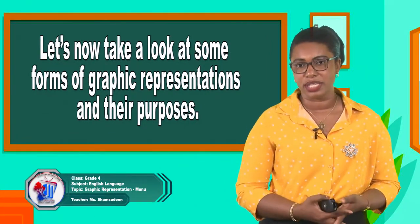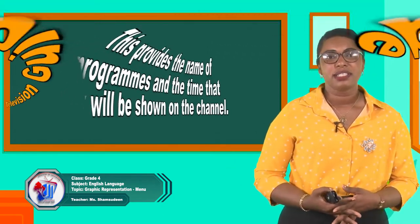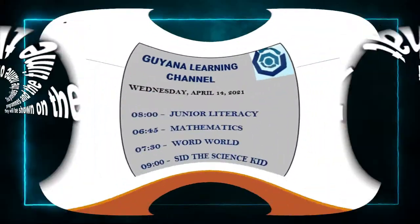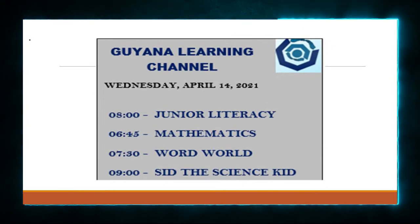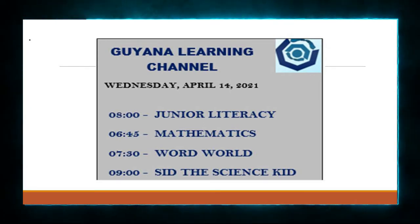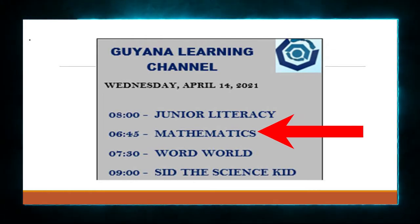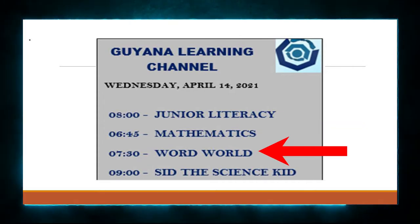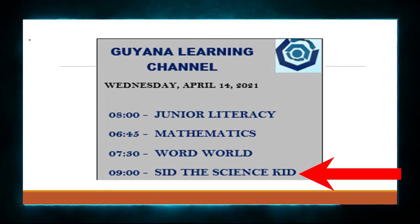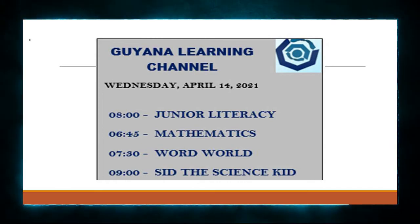Let's look at some of the forms of graphic representations and their purposes. The television guide, or TV guide, provides the name of programs and the time they will be shown on the channel. Here is an example from the Guyana Learning Channel for Wednesday, April 14, 2021. At 8 you have Junior Literacy, at 8:45 you have Mathematics, at 7:30 you have Word World, and at 9 you have Sid the Science Kid. You have the program and the time at which it will be shown.